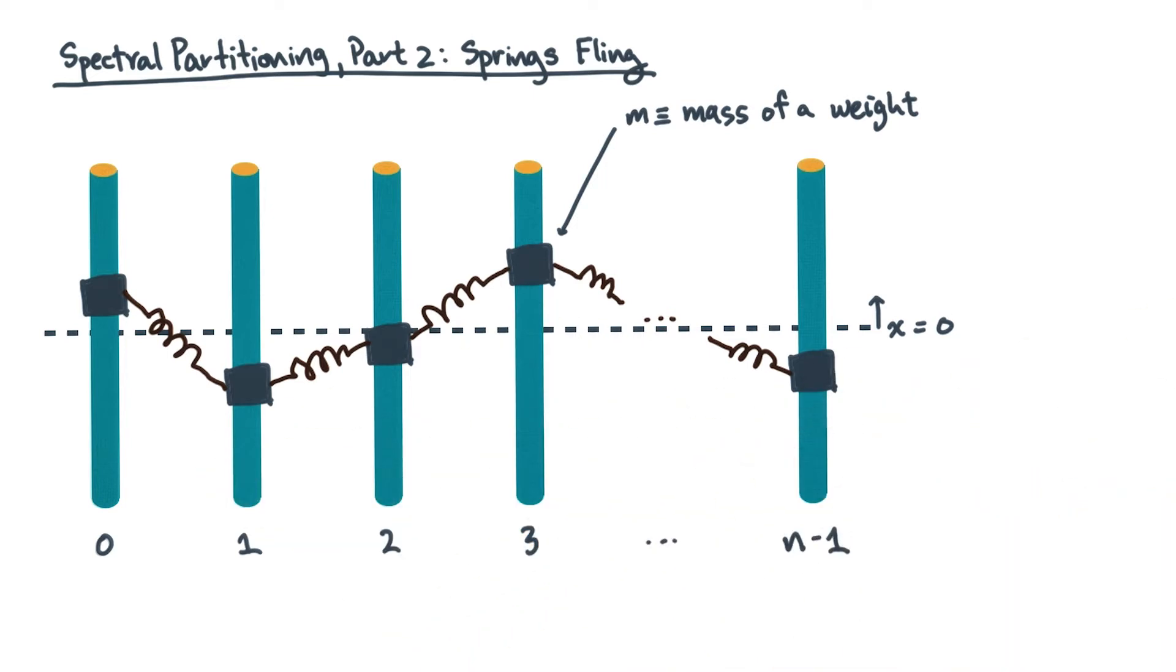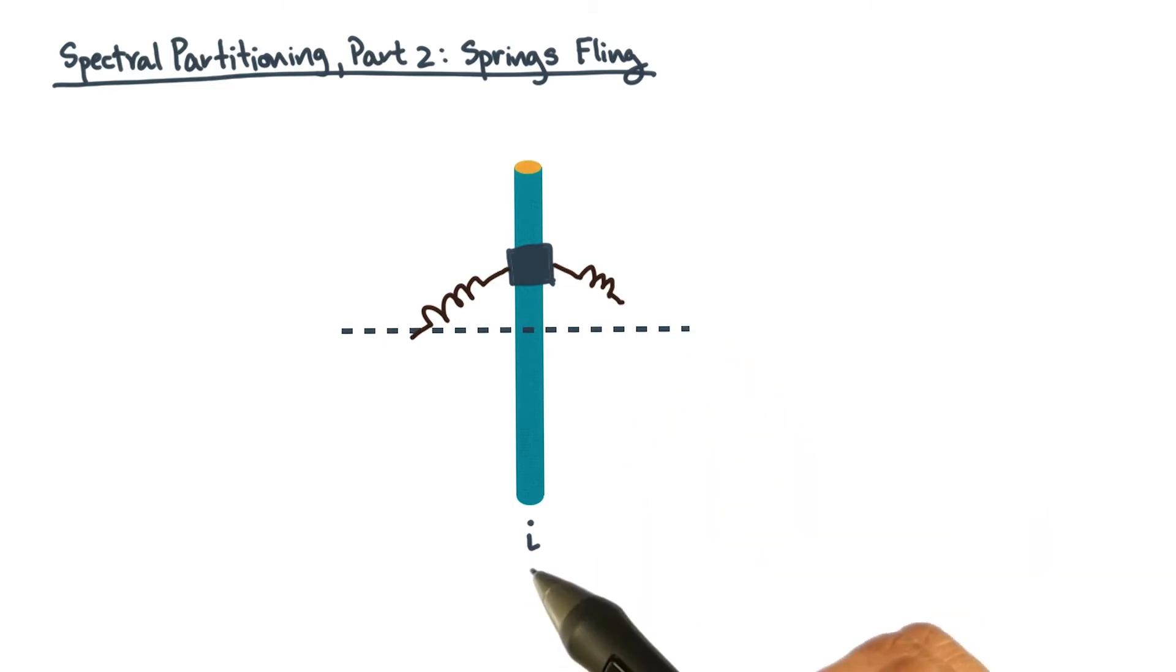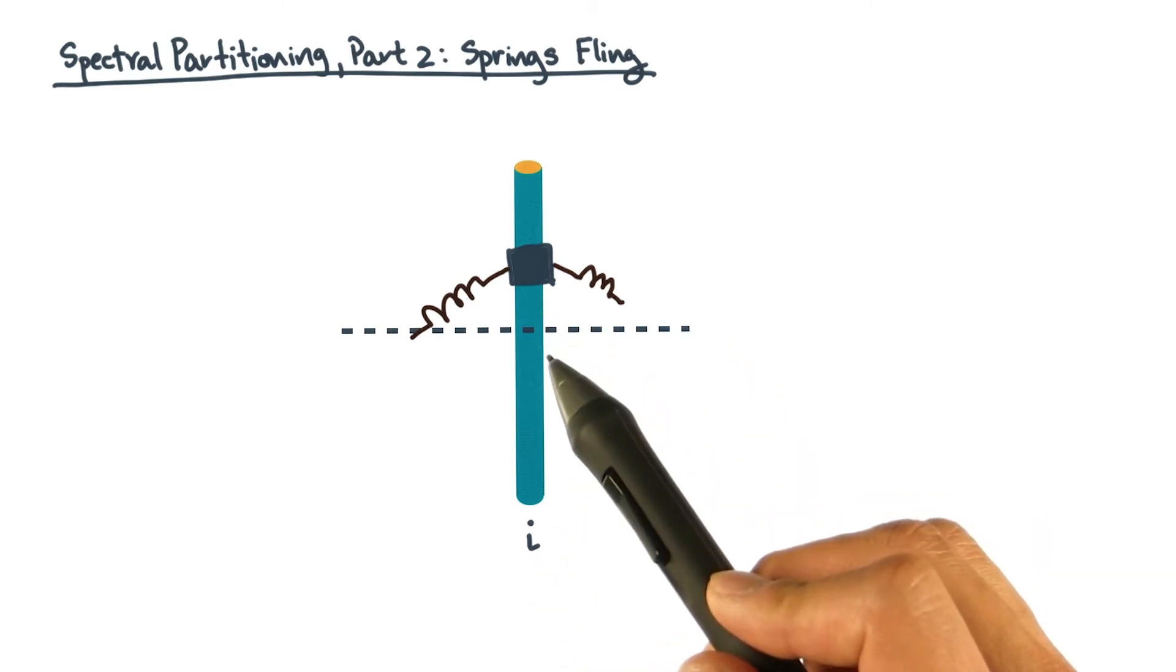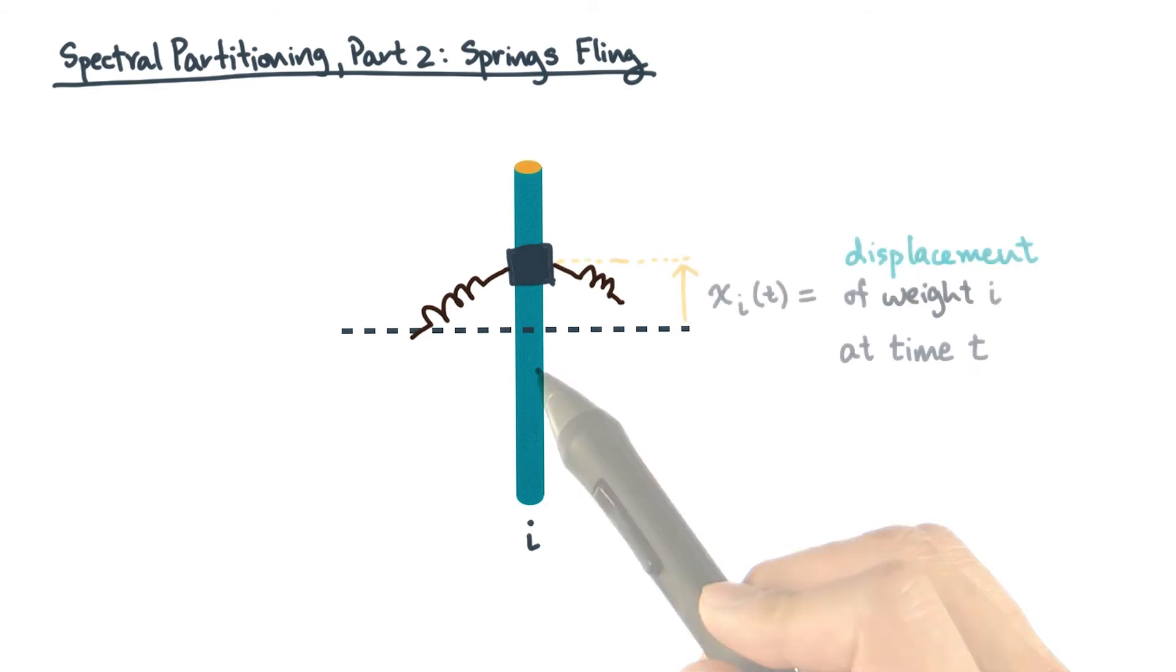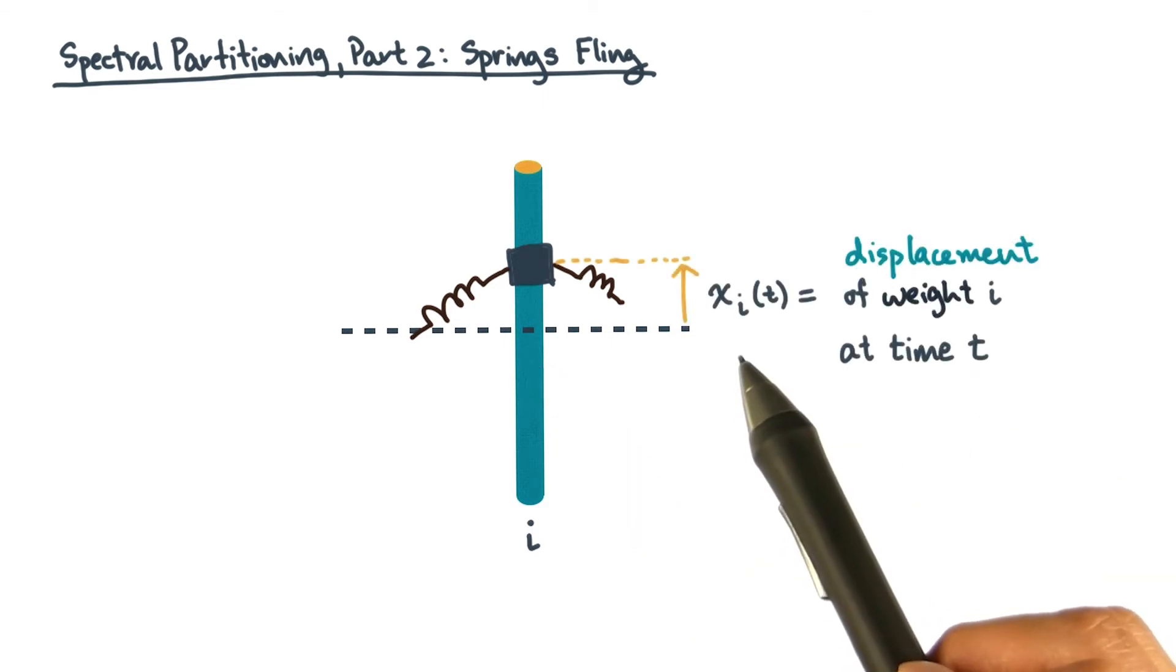Let's zoom in on one of the weights. Now relative to the reference line, weight i will be displaced by some amount at any point in time. Let's call this displacement x sub i of t.